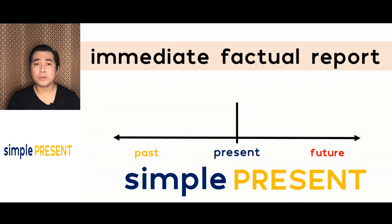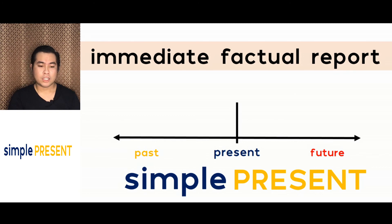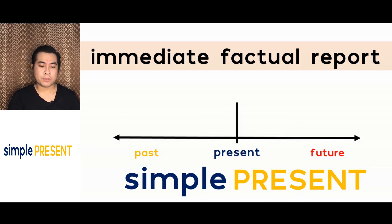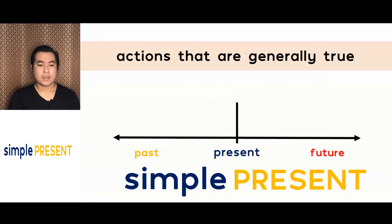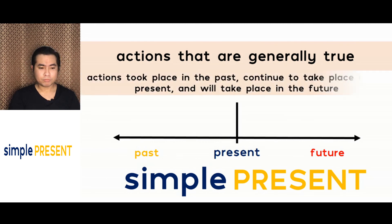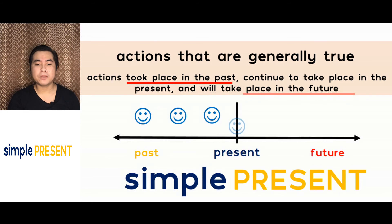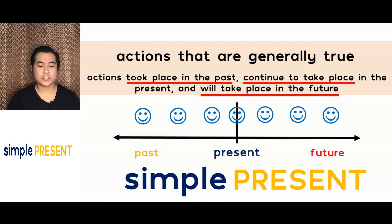In the simple present, where exactly is it on this timeline? Usually when we talk about the simple present, this is an immediate factual report. Actually, the simple present is the relevant tense for subject-verb agreement. It's an immediate factual report because in the moment of speaking, you are reporting what you're observing at that moment. Also, actions that are generally true — factual information or constant ideas that are not changing. So actions that took place in the past continue to take place in the present and will take place in the future. That's your simple present.